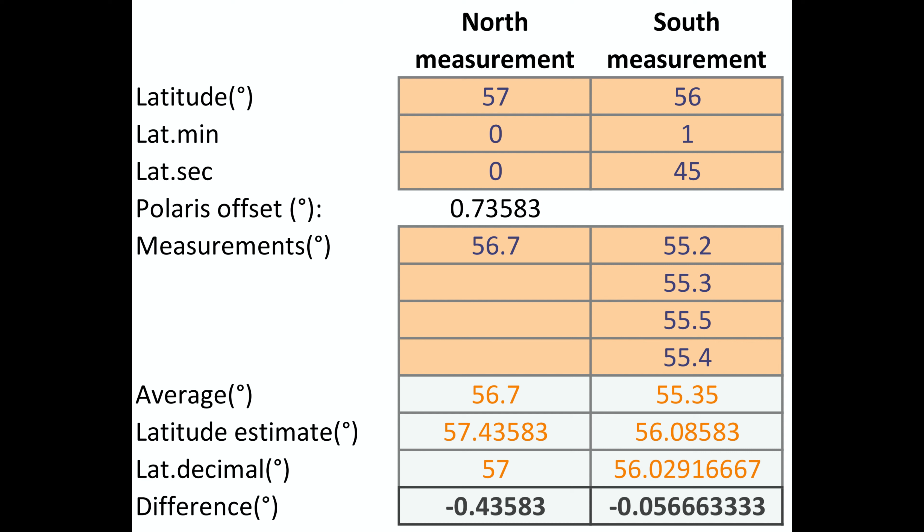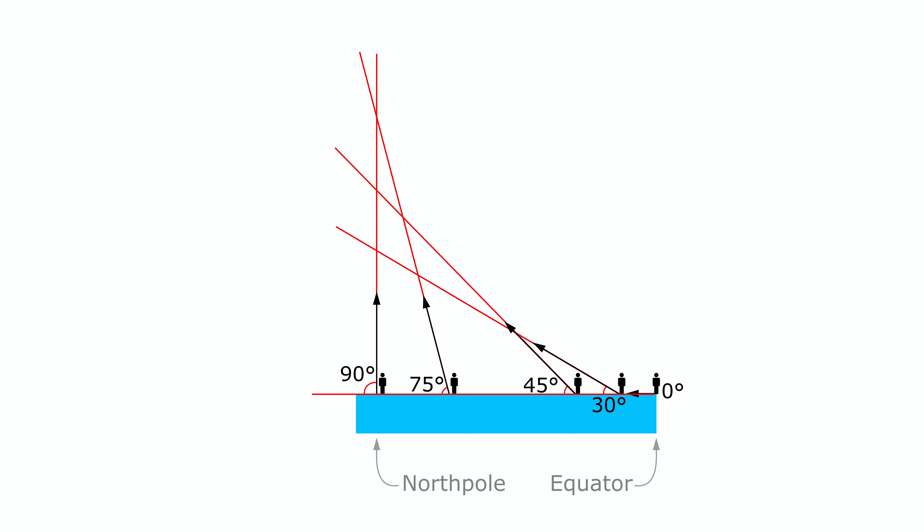The south measurements are crazy accurate with only a difference of 0.05 degrees from the expected value. The globe earth math predictions are therefore confirmed, not only at one latitude, but at two different latitudes. These measurements do not make sense on a flat earth.